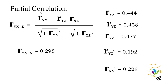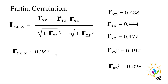We can easily find partial correlation using SPSS software. In the Analyze menu, under Correlation, the first option is Bivariate and the next is Partial. I'm also showing a formula for partial correlation. Here r_yx is 0.444, r_yz is 0.438, and r_xz is 0.477. Substituting these values with their squares into the formula, the partial correlation between y and x controlling z is 0.298, and the partial correlation between y and z controlling x is also calculated.